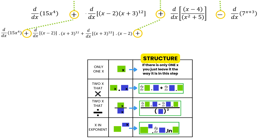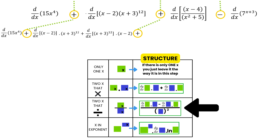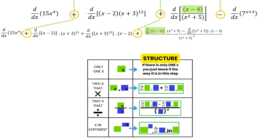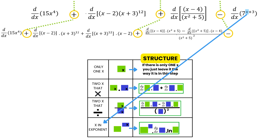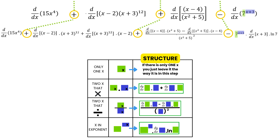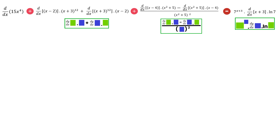In our third term we have two x's being divided, so the structure looks like this: we differentiate the top bracket and multiply it by the bottom bracket as is, then we subtract, and we differentiate the bottom bracket and multiply it by the top bracket as is — all of this goes over the square of the bottom bracket. For our last term the x is in the exponent, so we take the base and exponent as they are, multiply by the derivative of the power, then multiply again by the natural log of the base. With that, step two, set up, is complete.